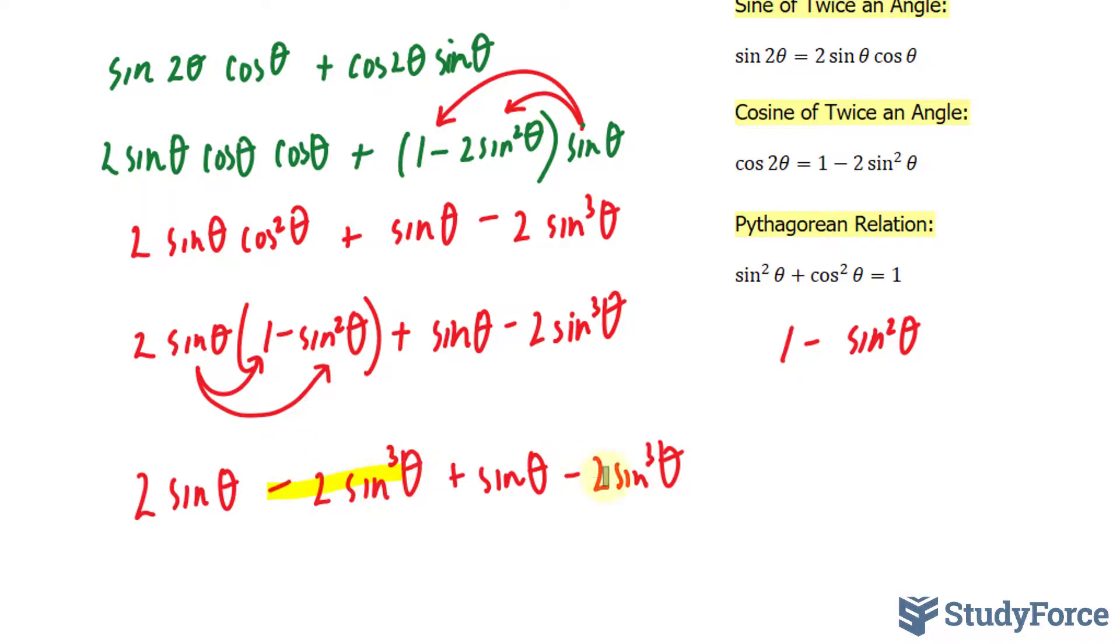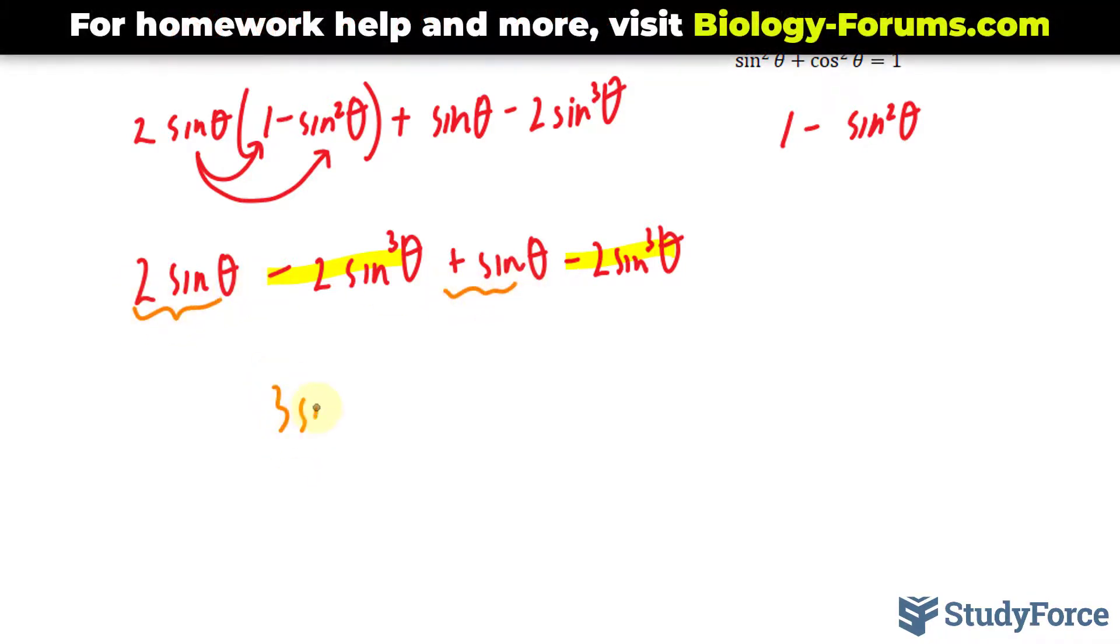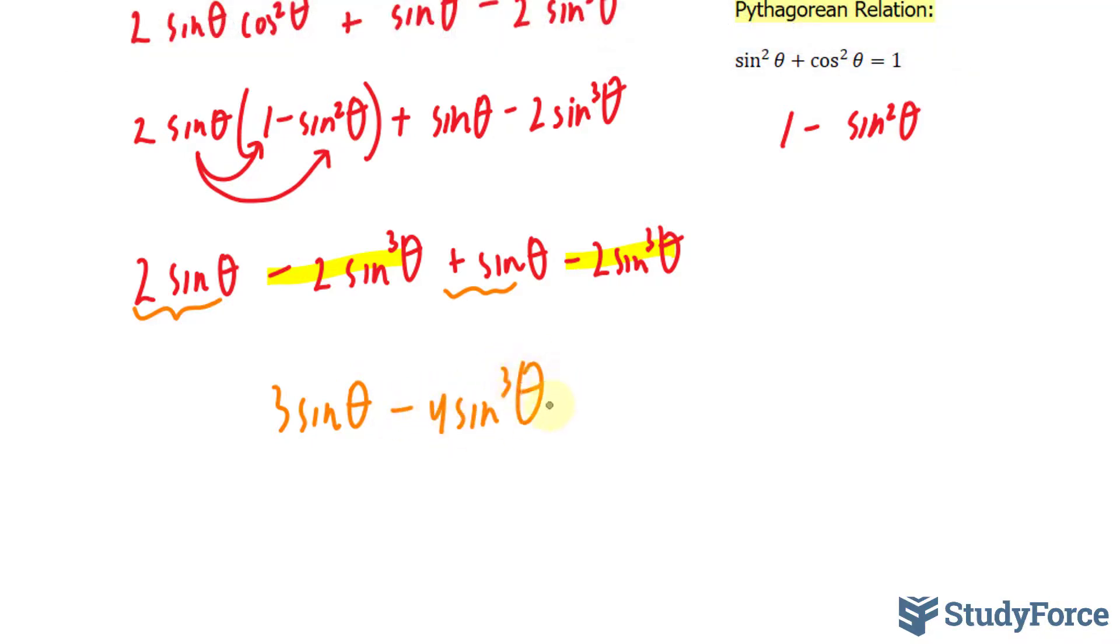This term and this term can be combined because they are like terms, and this term and this term can also be combined. We end up with 3 sin θ - 4 sin³θ.